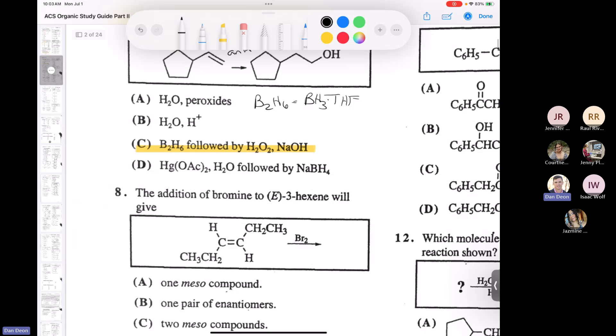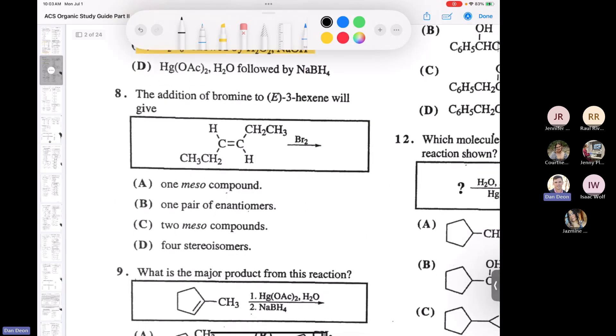Let's see here. Number eight is kind of a tricky, not tricky, but a question you have to think about. So we've already discussed if you have an alkene and you treat it with bromine, you get anti-addition, right? So anti-addition.